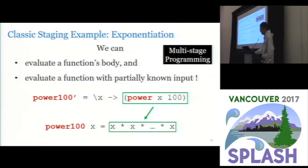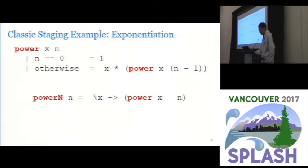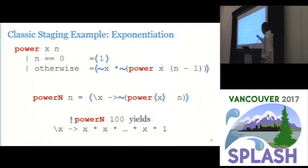Well with the help of MetaML we could do both. So now we have the generic power function and we specialize it to compute the nth power of the input. Now we add the staging annotations. Suppose we want to frequently compute the 100th power, we could do something like this and we get a special function that we want.